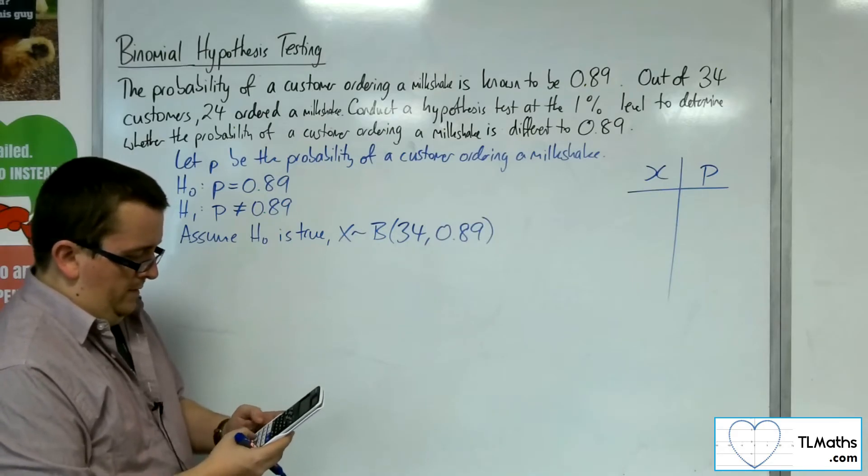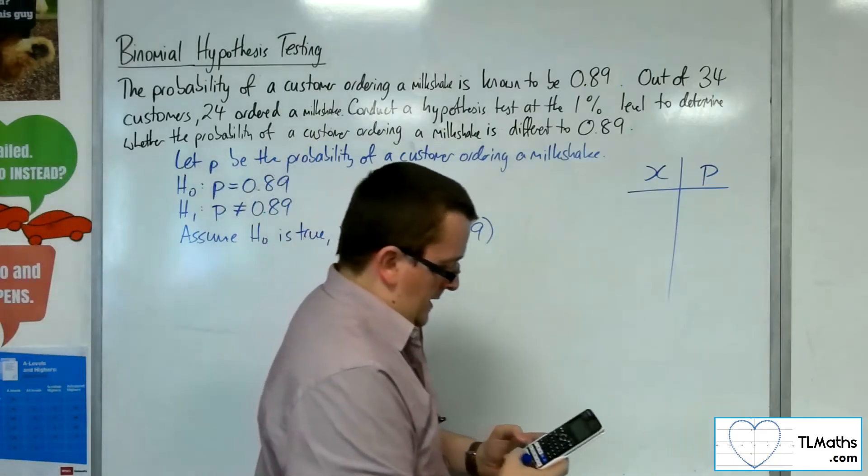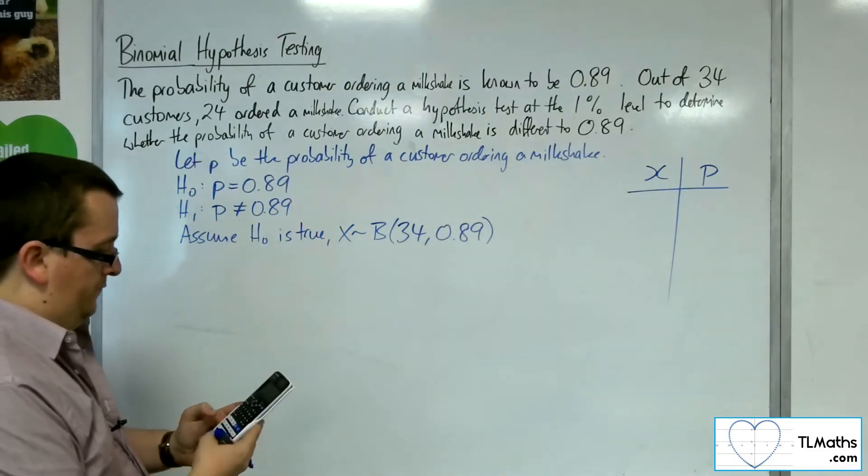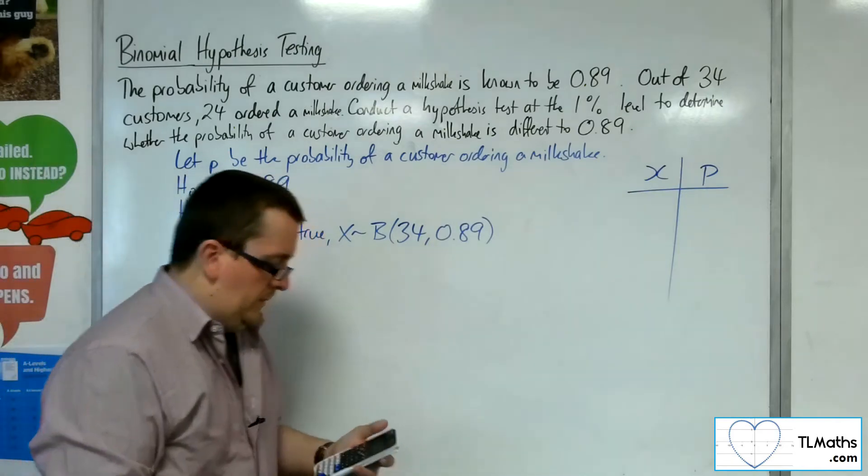29, 30, 31, 32, 33, and 34. N is 34, probability is 0.89.